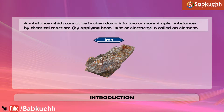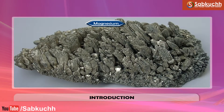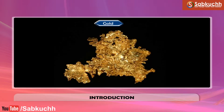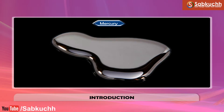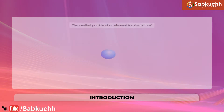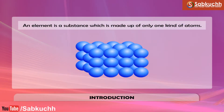Some of the common elements are sodium, magnesium, iron, copper, silver, gold and mercury. Every element is represented by a separate symbol. The smallest particle of an element is called an atom. An element is a substance which is made up of only one kind of atoms.